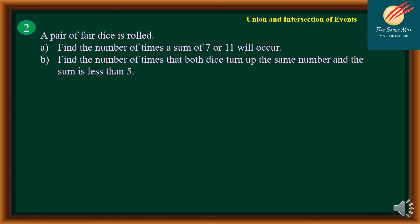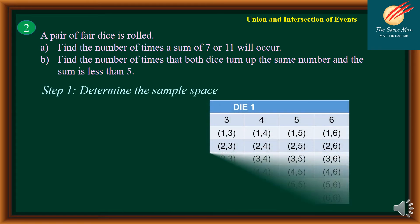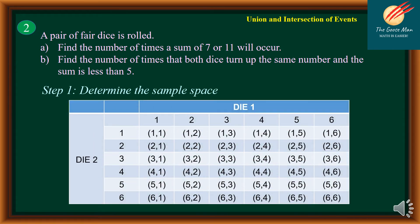Let's move on to problem number two. A pair of dice is rolled. Letter A: find the number of times a sum of 7 or 11 will occur. Letter B: find the number of times that both dice turn up the same number and the sum is less than 5. First, let's list down the sample space. We have two dice, so die one has numbers 1 to 6 and the second die also has numbers 1 to 6.